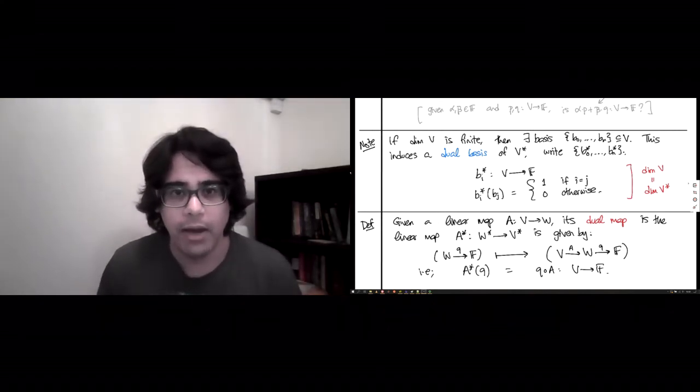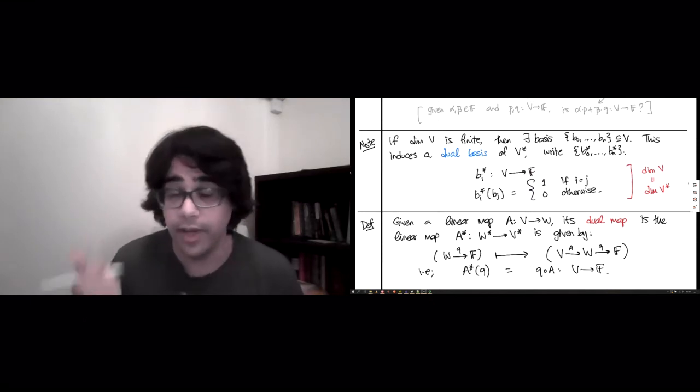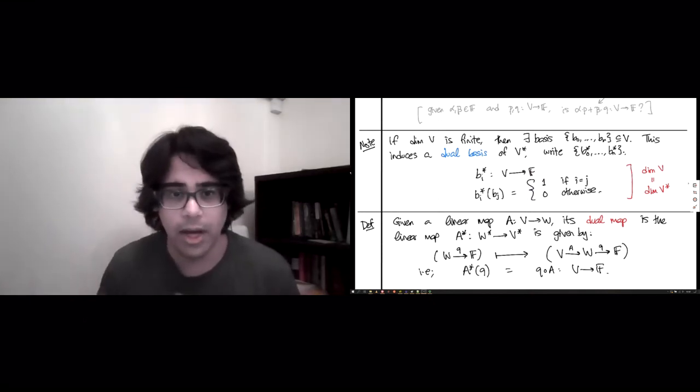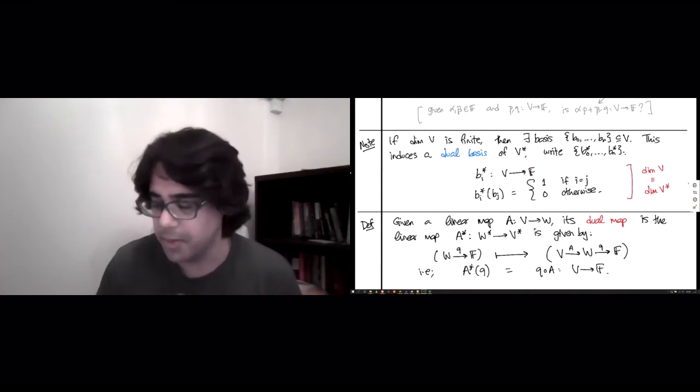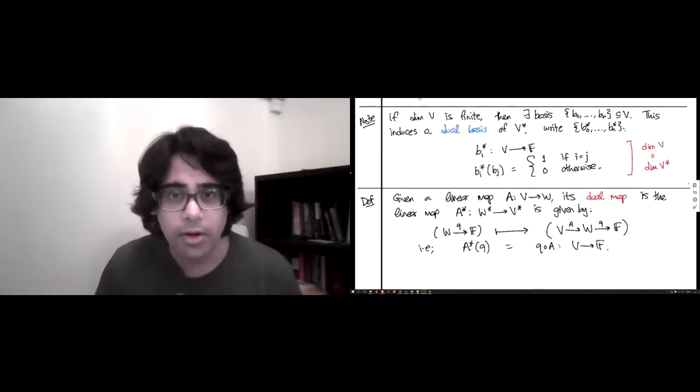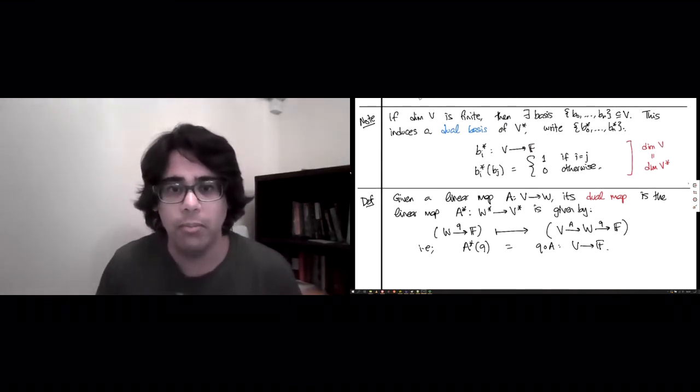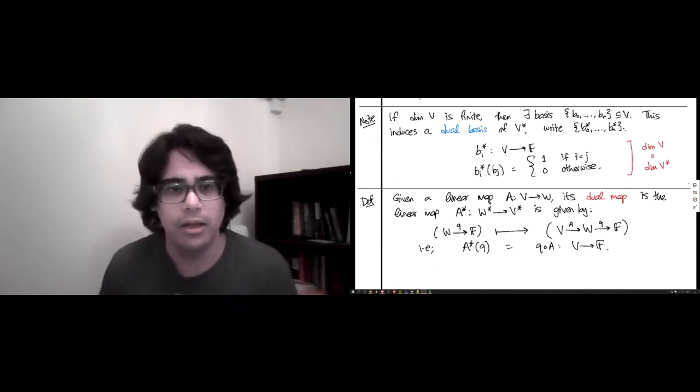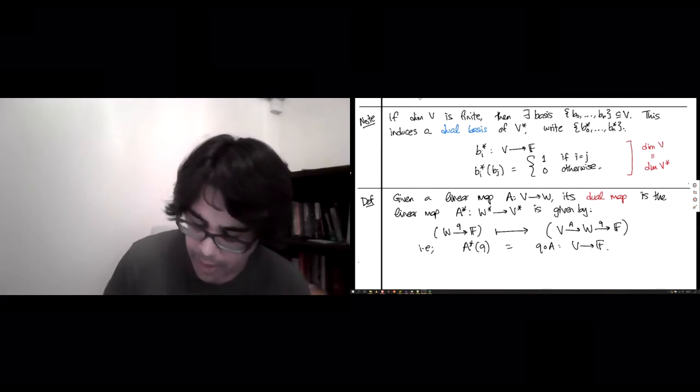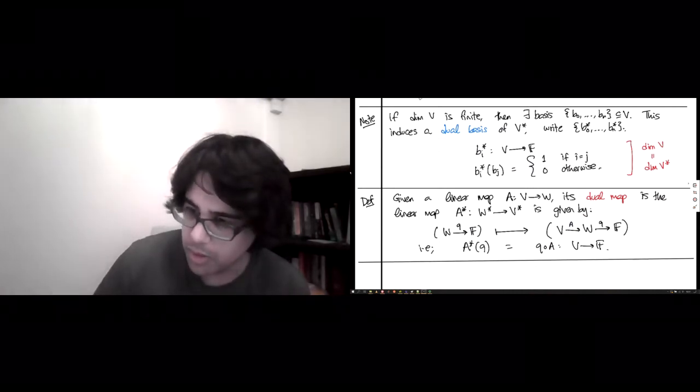We now know how to take duals of vector spaces and we know how to take duals of linear maps. The theory of cohomology is born when you apply this dualization machine to the data prescribed by a chain complex. That's what we will do next.